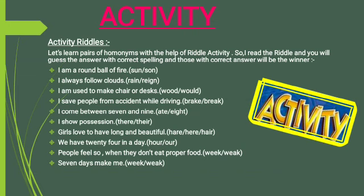Next riddle: I come between 7 and 9. If you know your counting, this is easy — 7 te 9 de wich kya aanda hai? Options are A-T-E meaning to eat (past form of eat) or E-I-G-H-T meaning the number 8. Correct answer is E-I-G-H-T — eight.